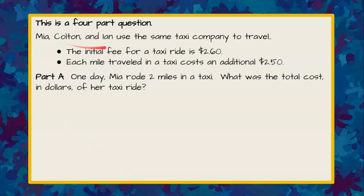Maya, Colton, and Ian use the same taxi company to travel. The initial fee for a taxi ride is $2.60. Each mile traveled in a taxi costs an additional $2.50. So we know just to get into the taxi they spend $2.60 and then every mile is recorded and they spend $2.50 per mile on top of the $2.60.